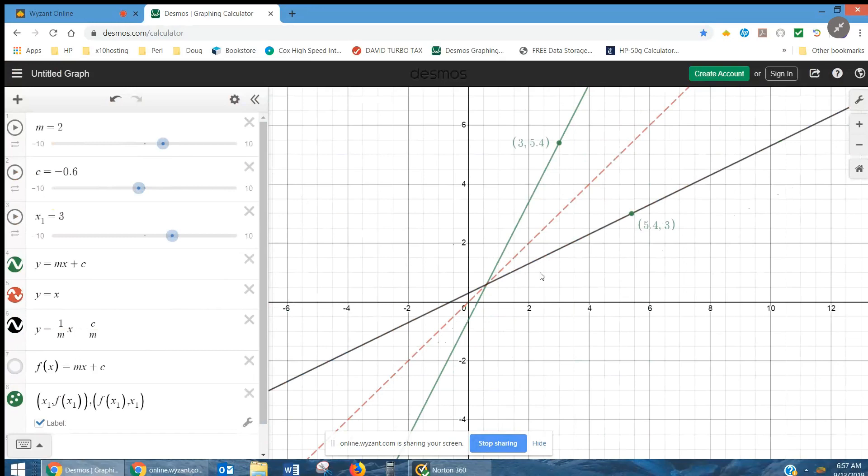And, you can see that the black line is a reflection of the green line through the line y equals x. And, when you reflect a function through the line y equals x, you're actually graphing the inverse function.